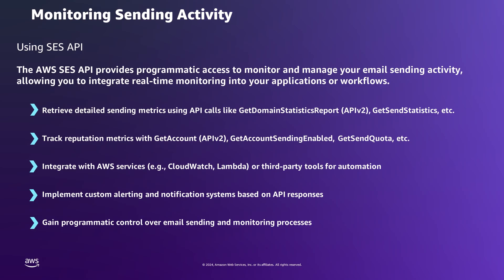These APIs are readily accessible through AWS SDKs, AWS CLI, and the AWS Management Console. The SES API can be used to create scripts or applications that automate email sending and monitor statistics in real time. This automation allows for comprehensive management of email activities, from observing long-term trends to quickly addressing any immediate changes in sending activity.